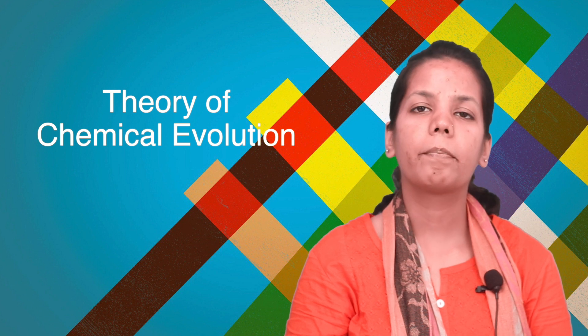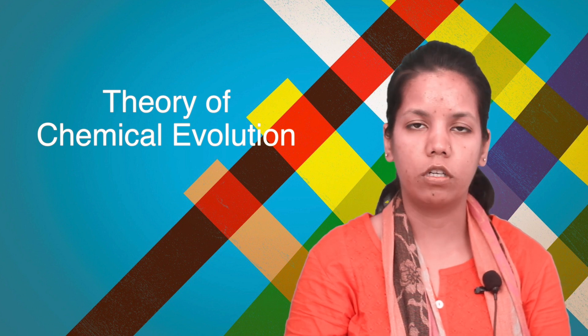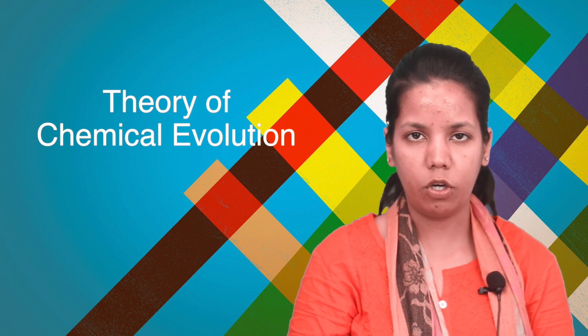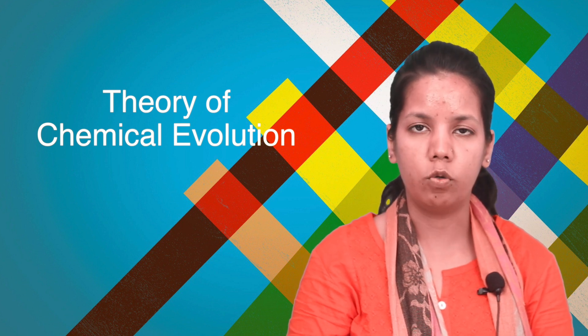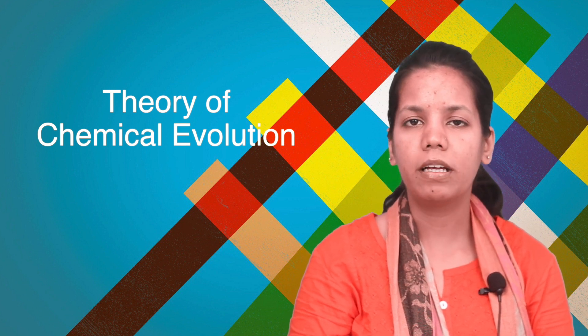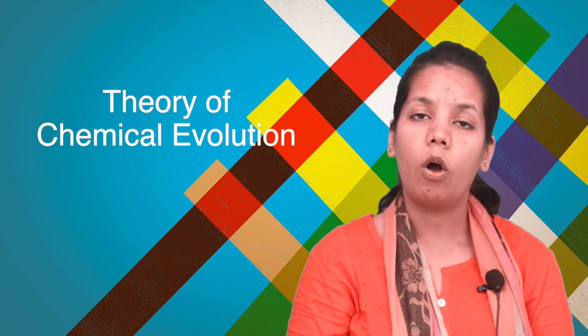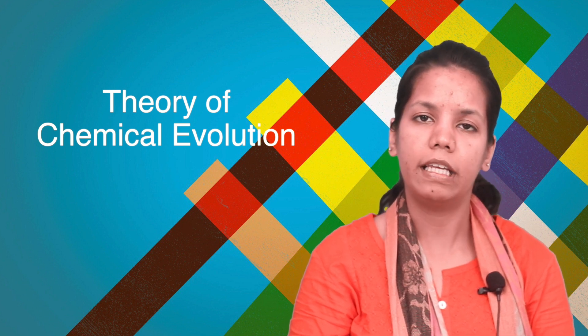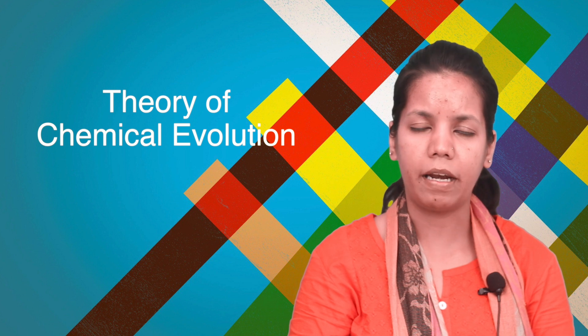we are studying chapter origin and evolution, and in that we are studying the topic theory of chemical evolution. Now this theory of chemical evolution was given by Operin in 1923 AD which had certain parameters. Let's study and find out about these parameters today.